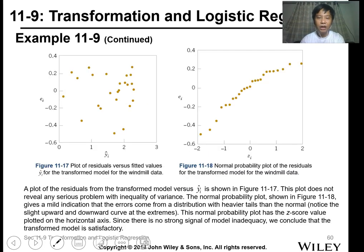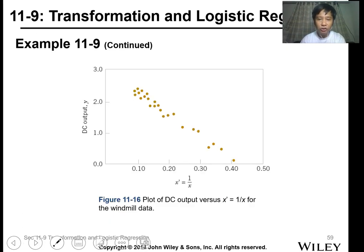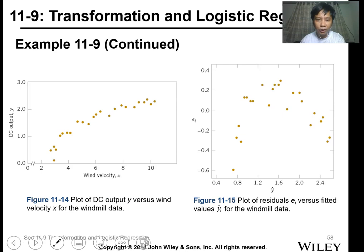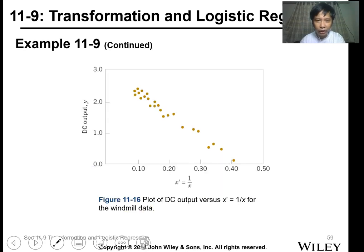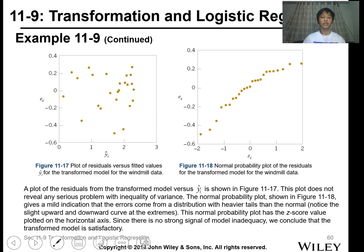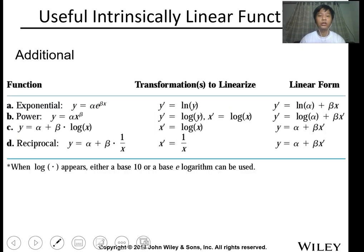When you plot it, it's not linear. But if you change the x value, for example, here, it's not linear. But if you change this one to 1 over x, it will be linear. So the model is linear. Same with this one.